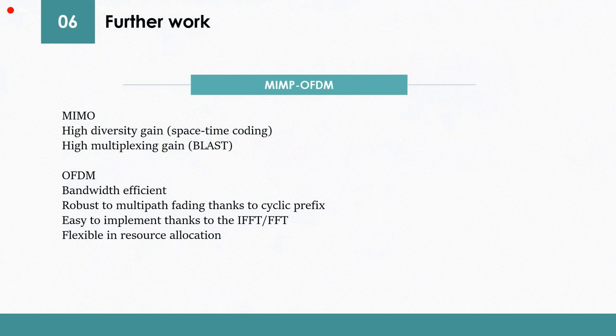Let's move to the further work of MIMO OFDM. MIMO means multiple input and multiple output. It has high diversity gain and high multiplexing gain. It combines with the OFDM advantages: bandwidth efficient, robust to multipath fading thanks to the cyclic prefix, easy to implement because it's using IFFT and FFT, and flexible to resource allocation, so it's greatly used in fourth generation mobile communication.